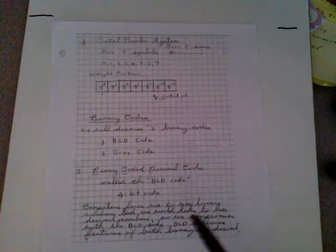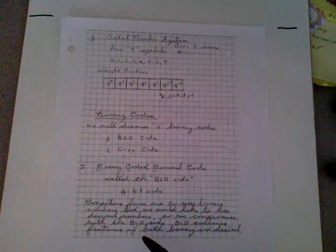We're going to start on page number 27 with binary codes. We're going to discuss two binary codes: the BCD code and a gray code. Binary coded decimal, called the BCD code, is a 4-bit code. Computers force us to use binary numbers, but we as human beings would like to use decimal numbers, so we compromise with the BCD code.